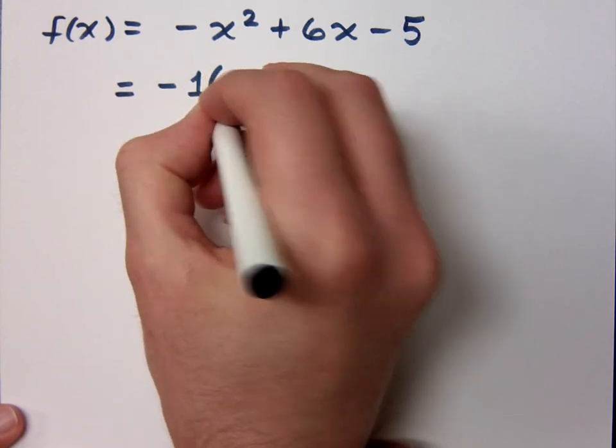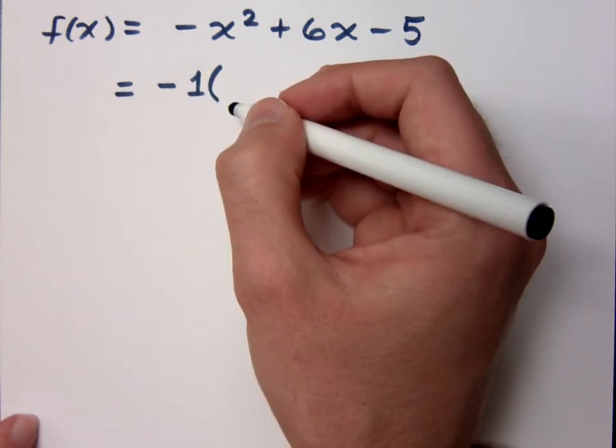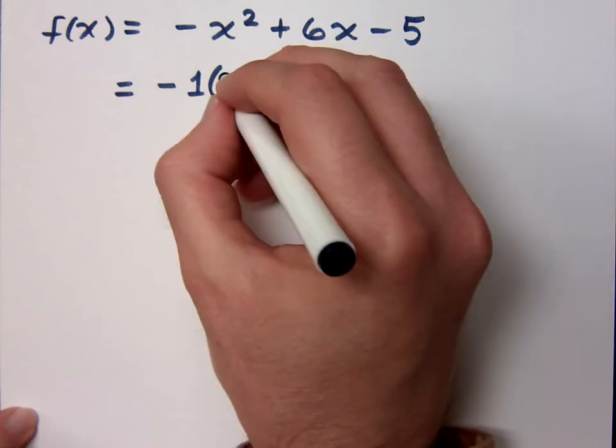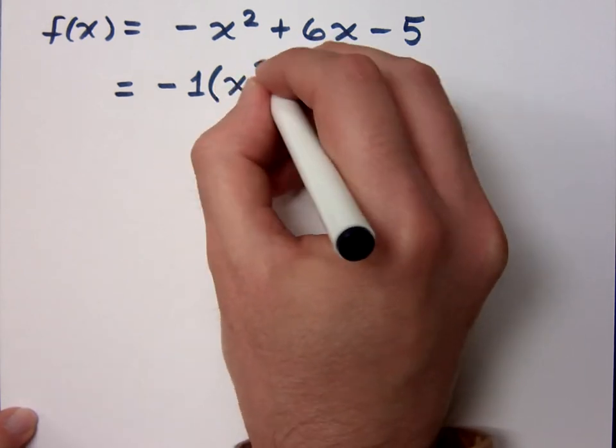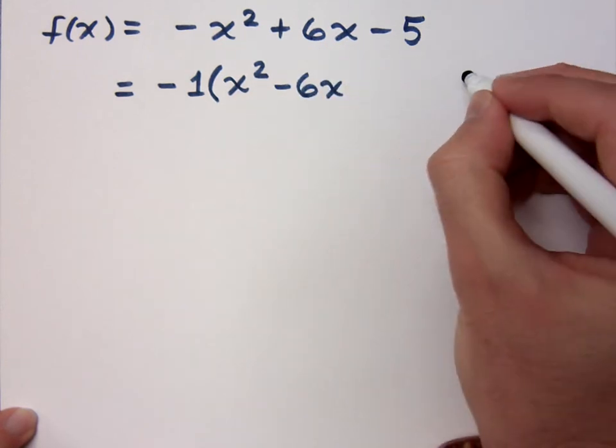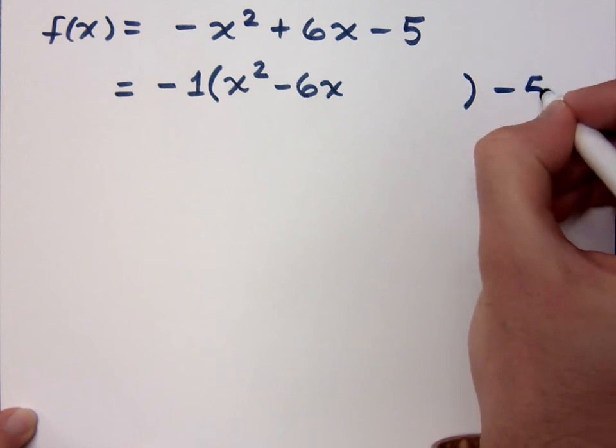So I'll factor out the negative 1, take out that lead coefficient, and what do you have on the inside here? Now, x squared minus 6x, leave some space because you don't have to fill that in, and then minus 5.